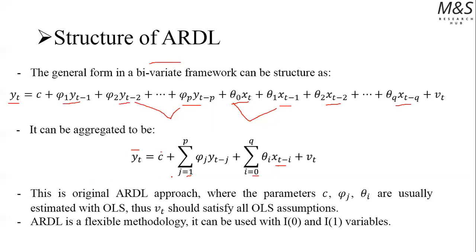Now, this is the original ARDL approach, and the parameters c, which is the constant term, phi, which is right here associated to the past values of the dependent variable, and theta, which is associated to the x variable, these are the parameters which are estimated by the regression, and it is usually estimated with ordinary least squares estimator.